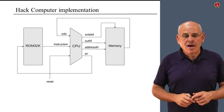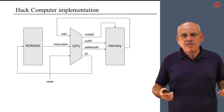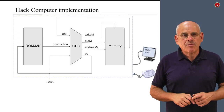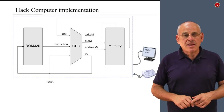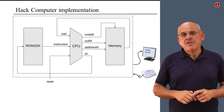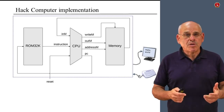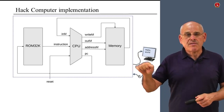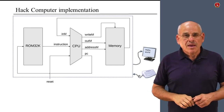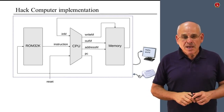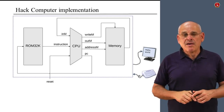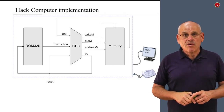To do something useful with the CPU's outputs, we connect them to the memory unit: what we want to write, where we want to write it, and the load bit. We then take the output of the memory and connect it back into the CPU, because many instructions need to operate on memory values. This completes our computer architecture. All we add now is the overall interface — the output and input units.